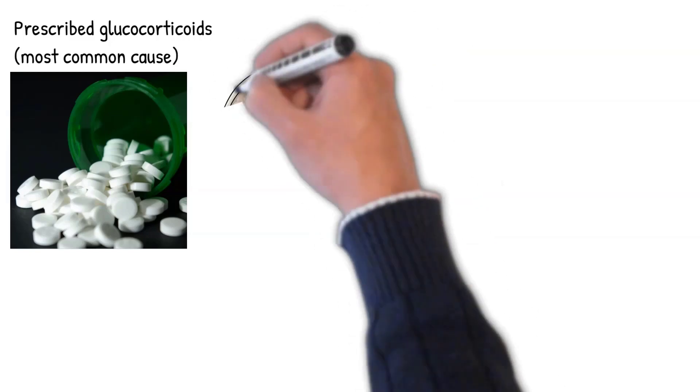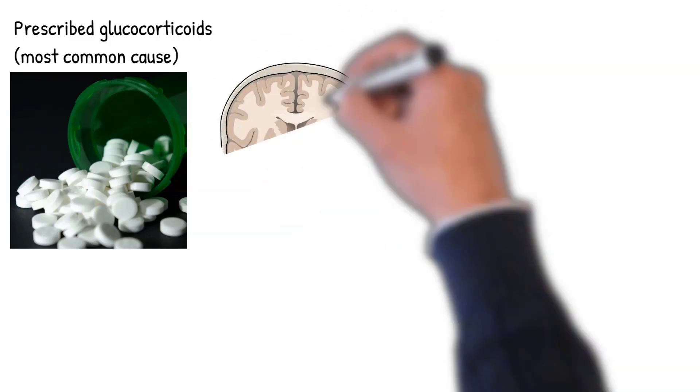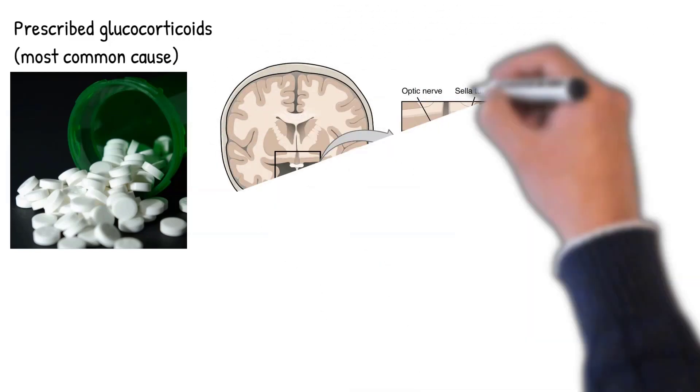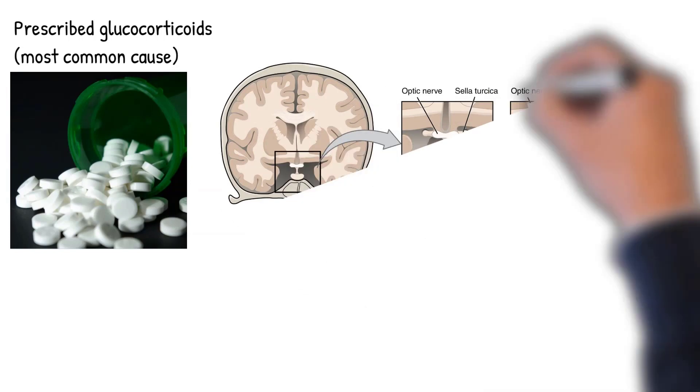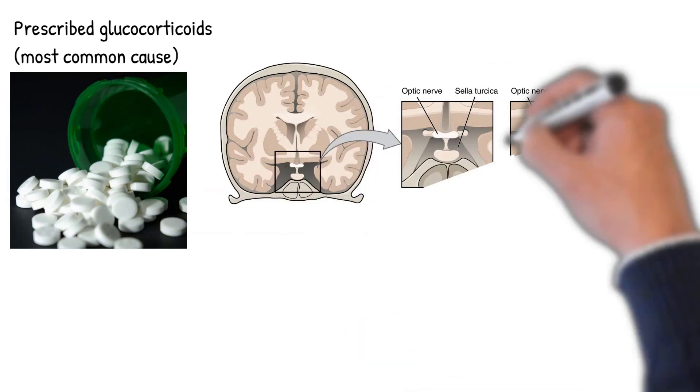Glucocorticoids are used in the treatment of a variety of disorders, including asthma and rheumatoid arthritis, and are also used for immunosuppression after organ transplants.